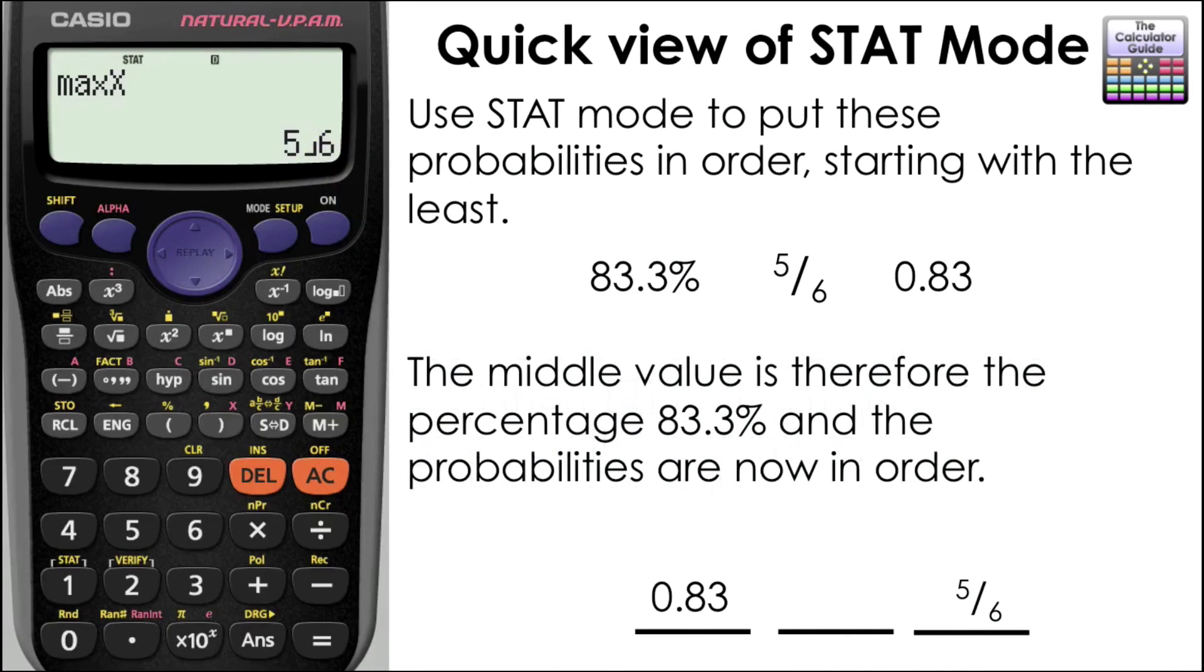As we only have three values, the percentage 83.3% must fall in the middle. So we've actually now put the three probabilities in order.